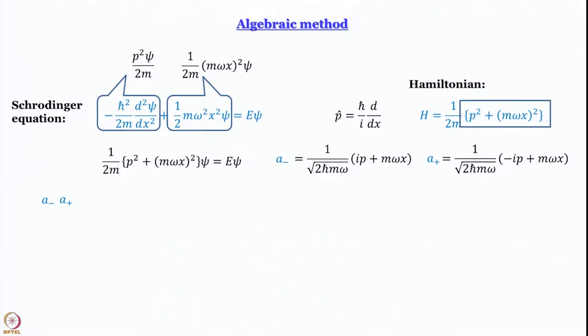If p and mωx were numbers, the Hamiltonian p² + (mωx)² would factor simply as a product of (ip + mωx) and (−ip + mωx) type quantities. But obviously that will not work because these are not numbers — they are position and momentum operators. So let us see what we get when we express the Hamiltonian in terms of a⁻ and a⁺.